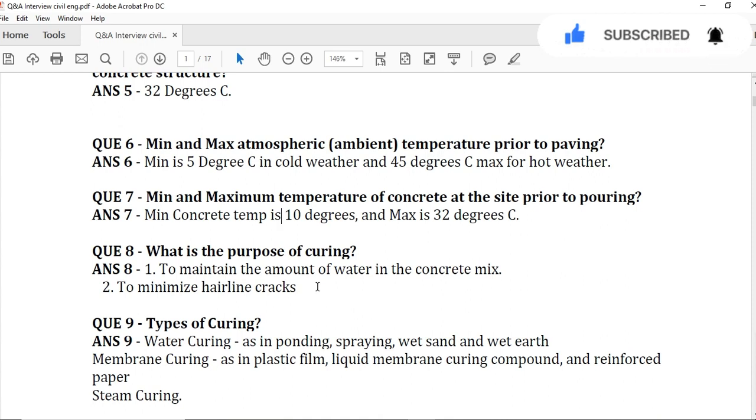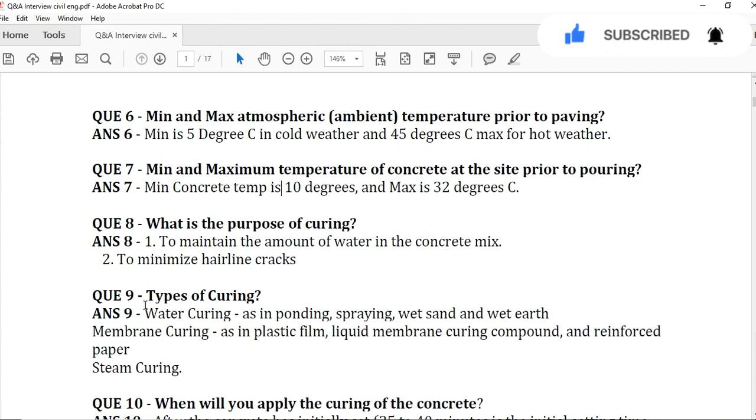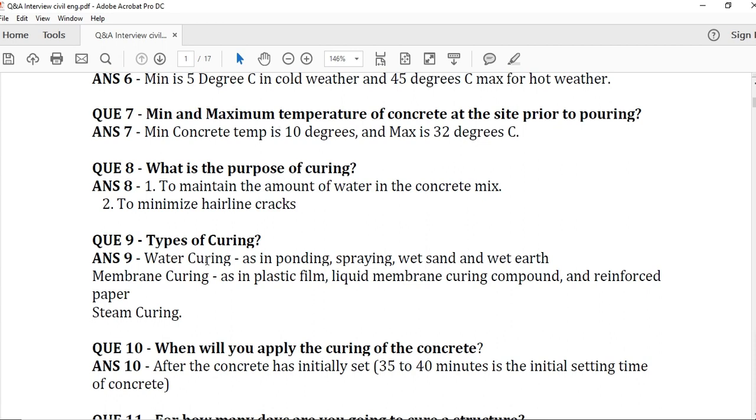Now the next question, question number 9 is about the types of curing. In question number 8, we discussed the curing, what is the curing. Now in question number 9, we will discuss how many types of curing we have. So water curing, as in the kind of ponding, spraying water, wet sand and wet earth, membrane curing, as in plastic film, liquid membrane curing compound, and reinforced paper, steam curing. These are the different types of curing.